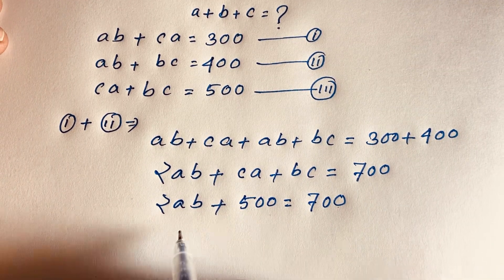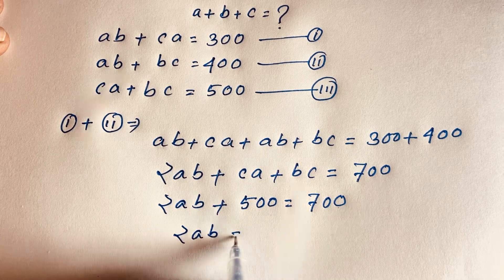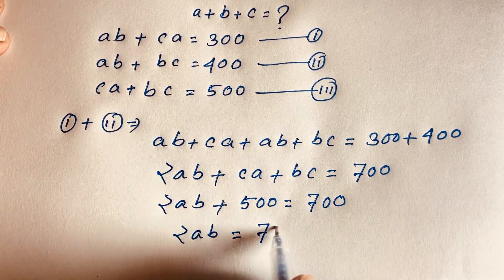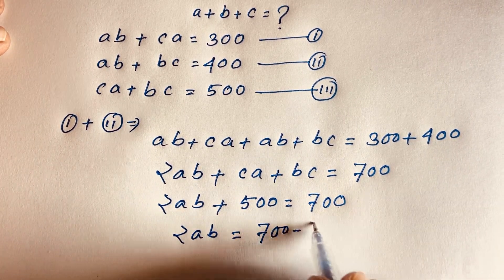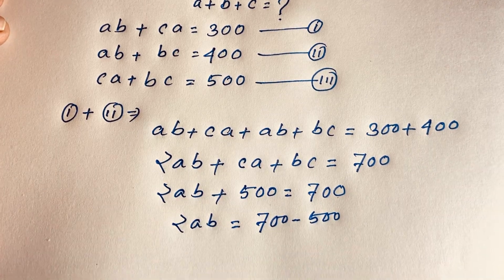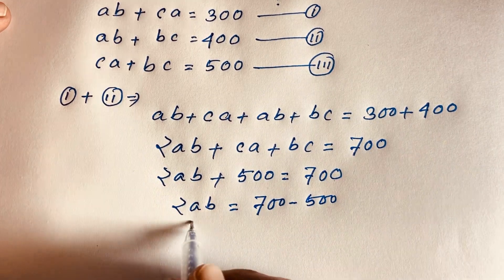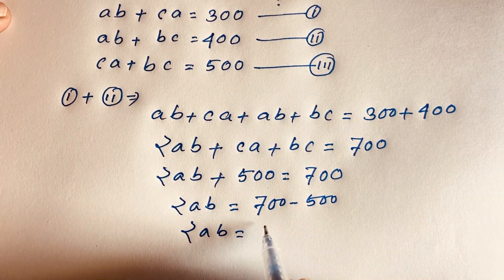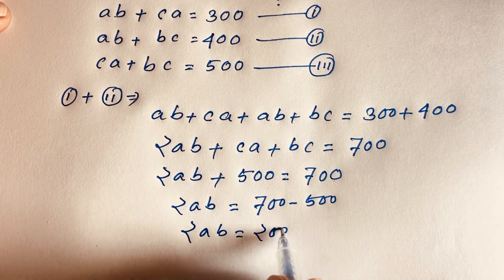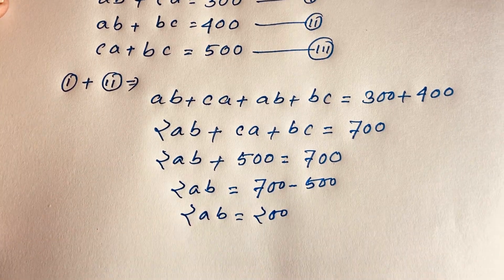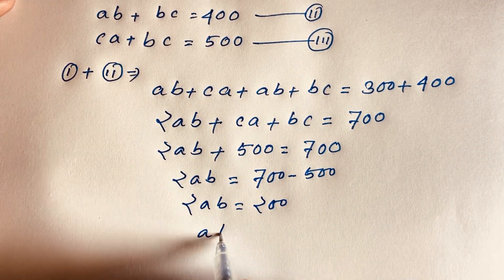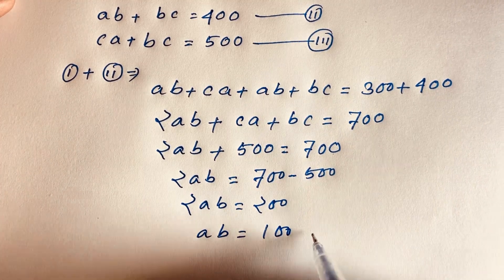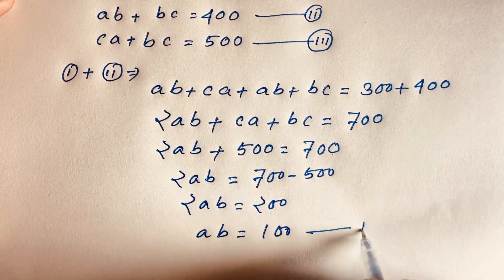Moving 500 to the other side gives 2ab equals 700 minus 500, which is 200. Dividing both sides by 2, we find ab equals 100. This is our fourth equation.